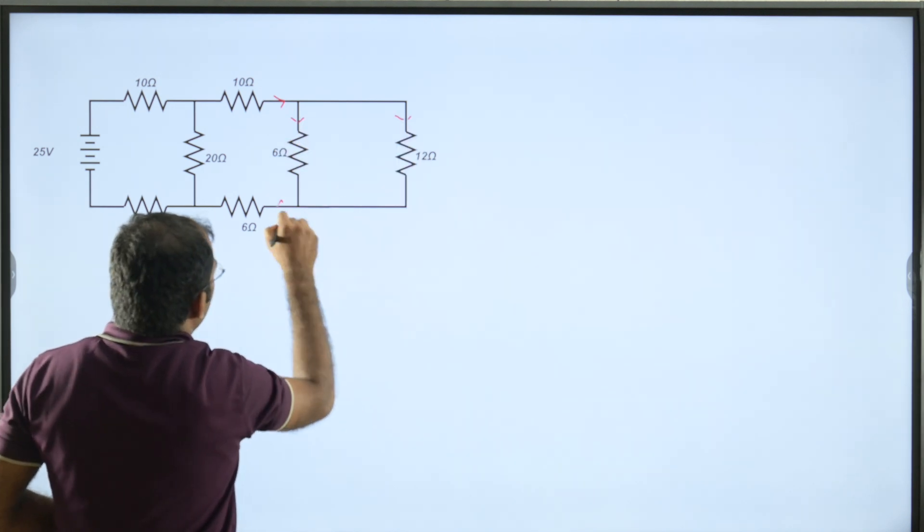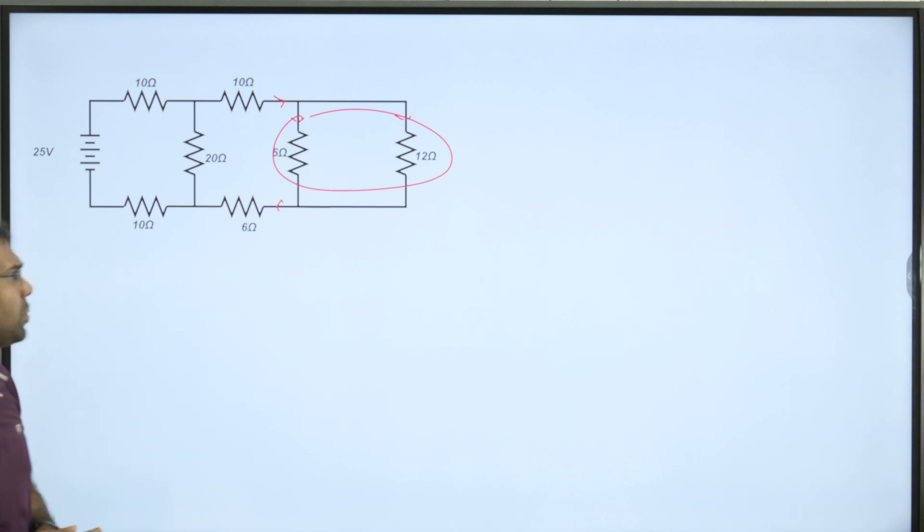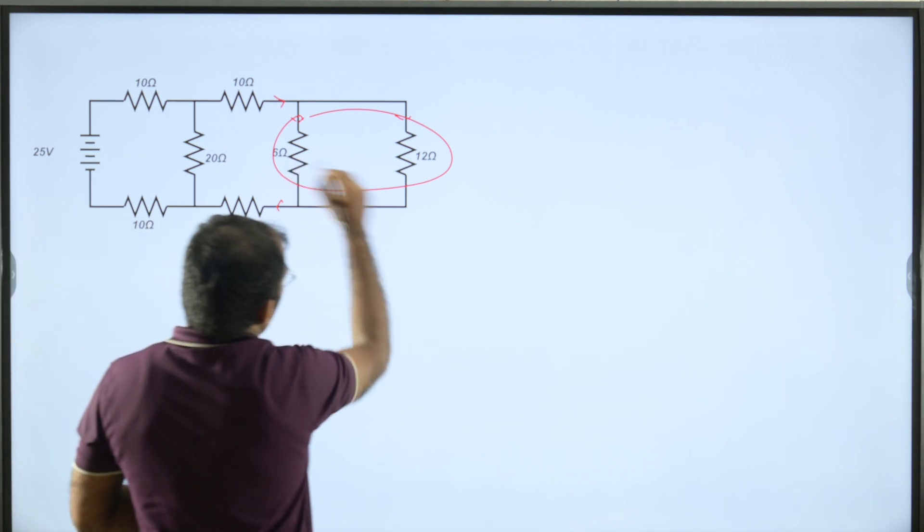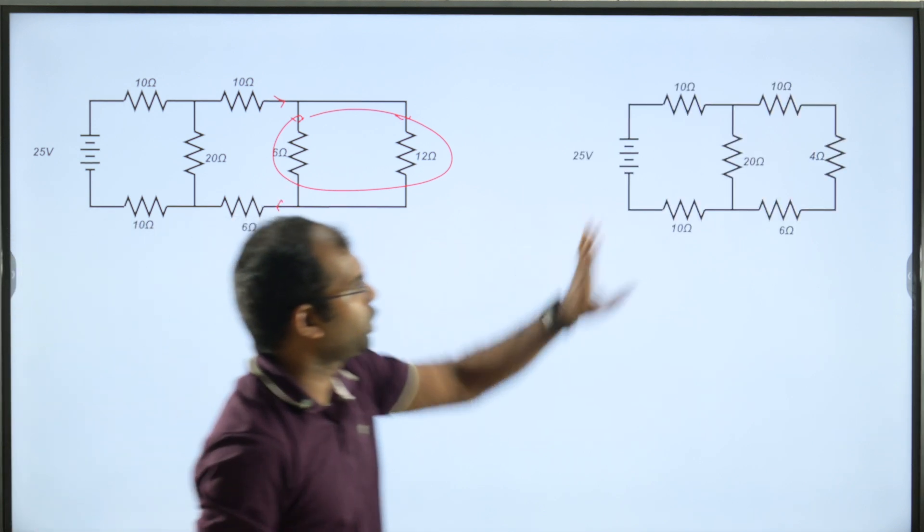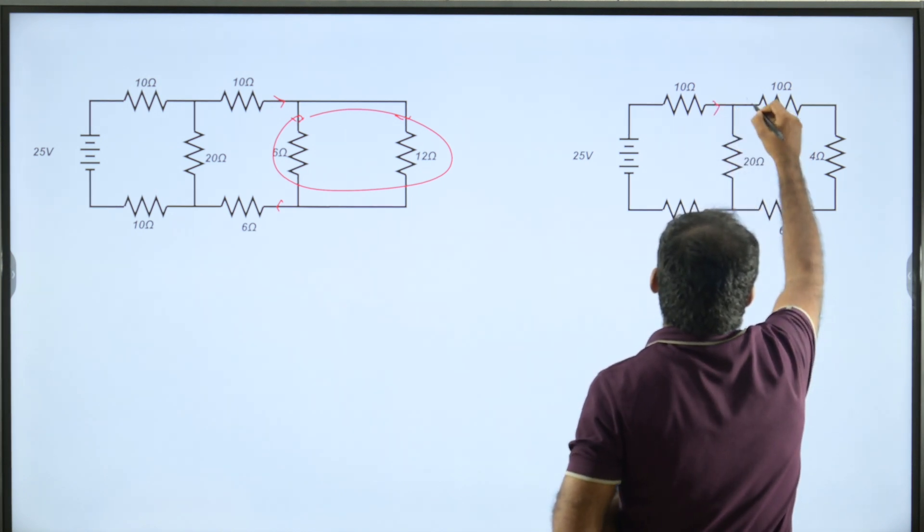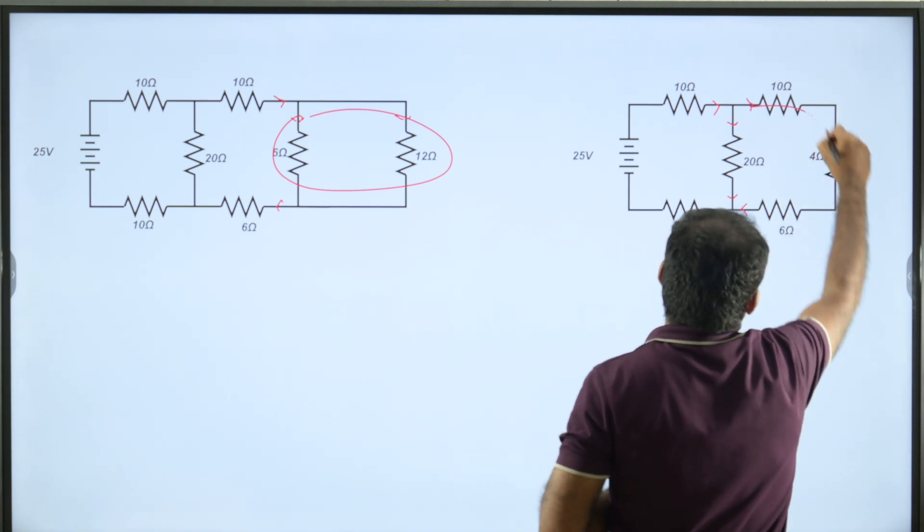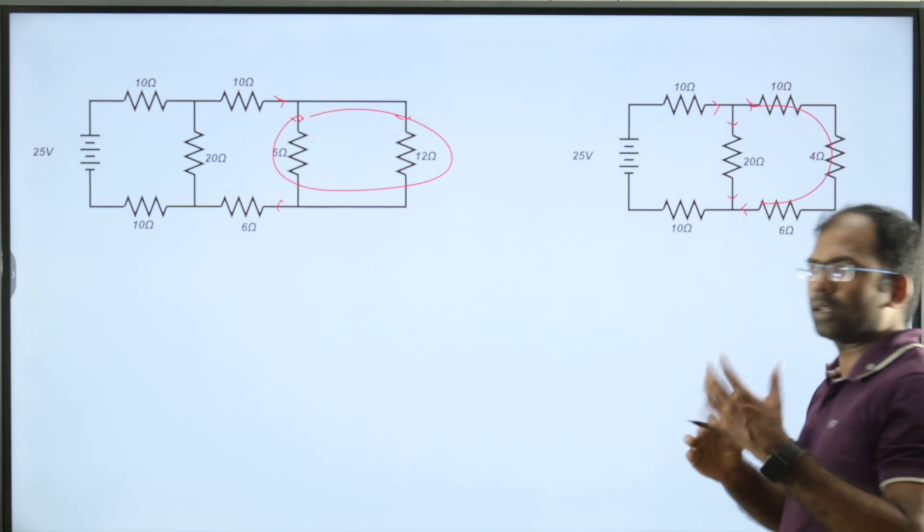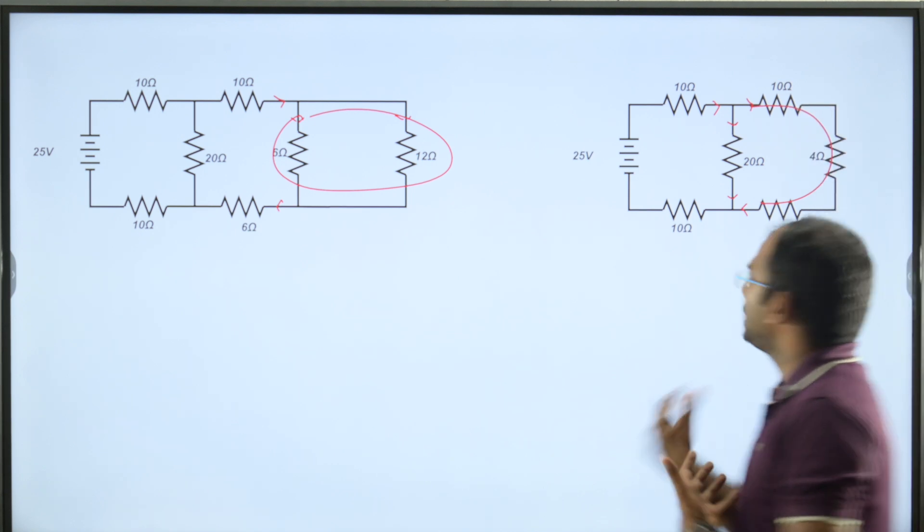Then these two resistors are in parallel. The equivalent will be equal to 4 ohms.